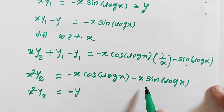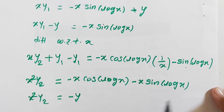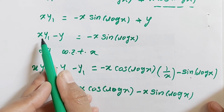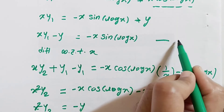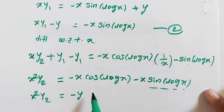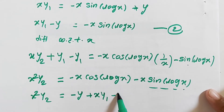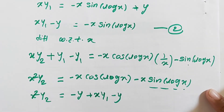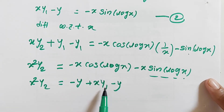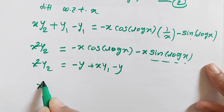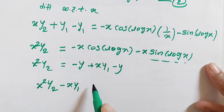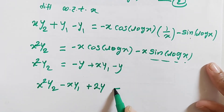Looking at the left-hand side, we have the term minus x·sin(log x). From equation 2 we know that minus x·sin(log x) equals x·y₁ minus y. Substituting this in, we get x²·y₂ minus x·cos(log x) minus y plus (x·y₁ minus y). Collecting everything, x²·y₂ minus x·y₁ plus 2y, shifting to the left, gives x²·y₂ minus x·y₁ plus 2y equals 0.